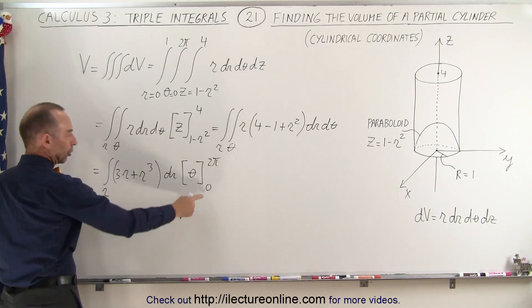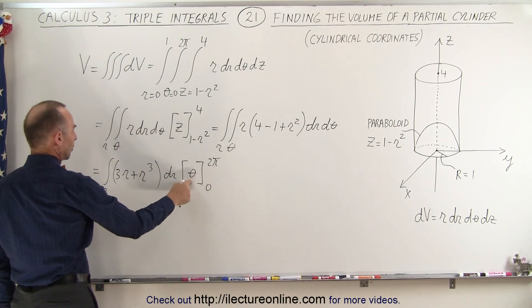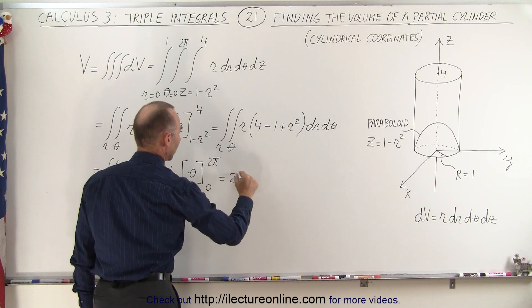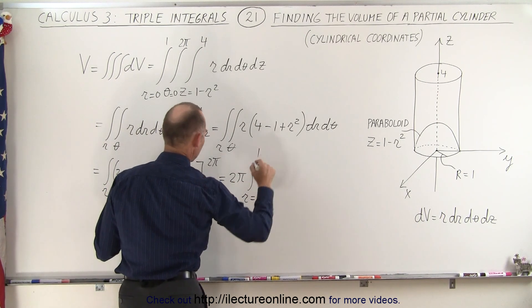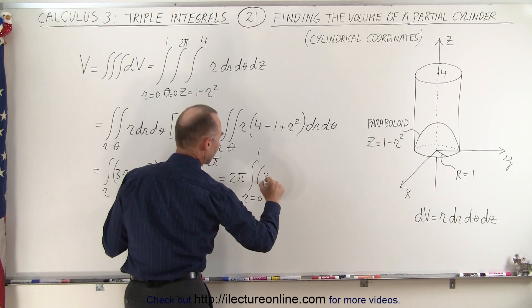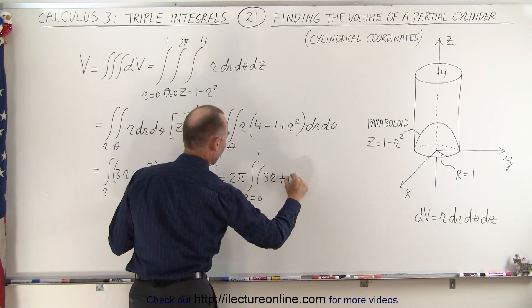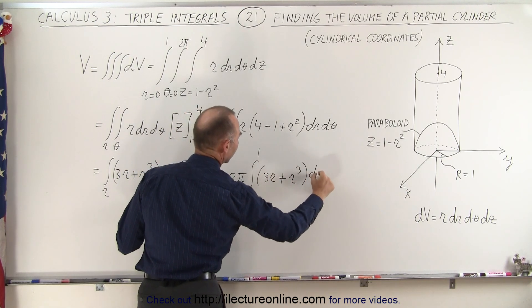So when we plug in the lower limit, we get 0. Plug in the upper limit, we get 2π. So this is equal to 2π times the single integral from r equals 0 to 1 of the quantity 3r plus r cubed dr.